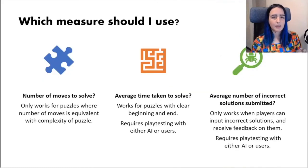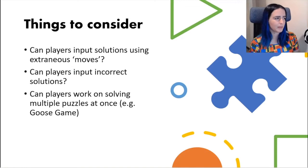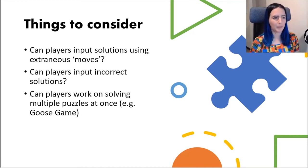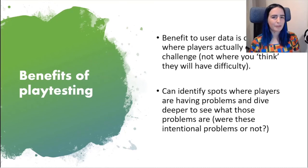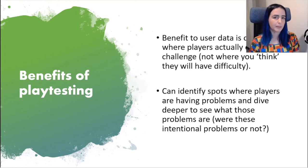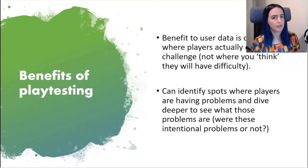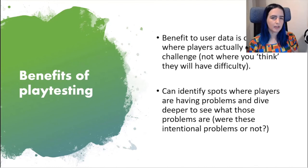Average time taken and average incorrect solutions also require playtesting — which you could do with either AI or actual users. The key question is which measure will work best for the type of puzzles in your game; it's not always the same, and you might come up with new measures that work better. The benefit I found to having actual users playtest and observing them was being able to see where players actually experienced challenge, rather than where I or a designer might think they would. Using actual data showcases where the challenging sections are, and designers can then dive into those difficult sections to figure out why they're difficult — whether that was intended or whether players were just missing an obvious clue — and use that to fine-tune the design.